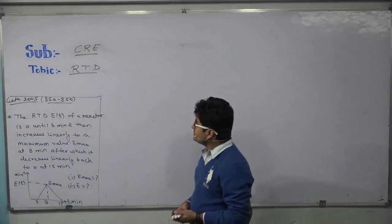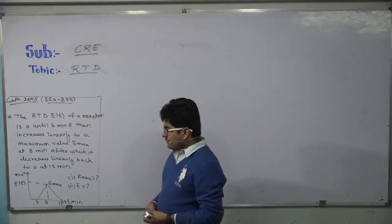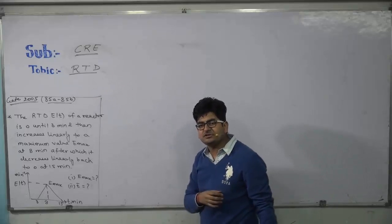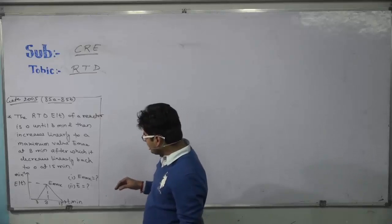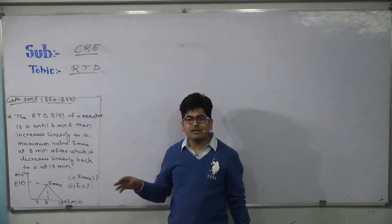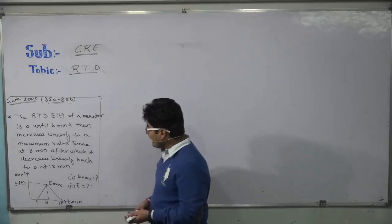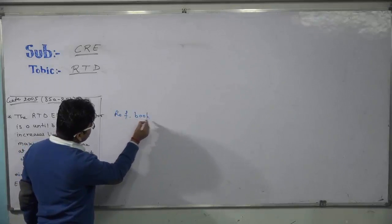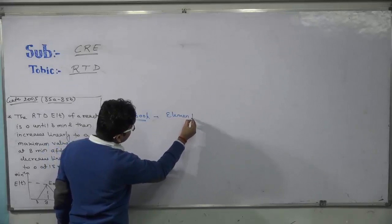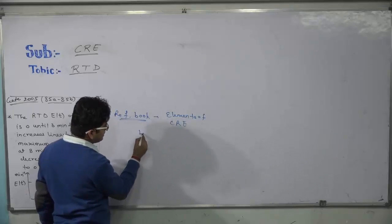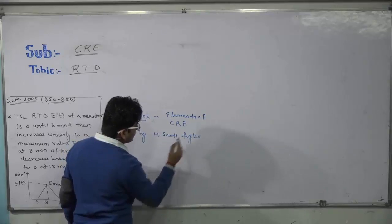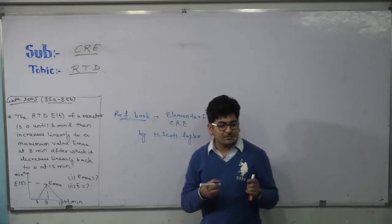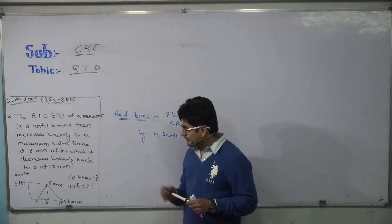Hello friends, my name is Ankush, faculty at Gate Coach. We will now talk about Residence Time Distribution (RTD) from the subject Chemical Reaction Engineering — how to solve a problem on RTD. For reference, you can use the book 'Elements of Chemical Reaction Engineering' by H. Scott Fogler, which is the best book for this topic. I'm assuming all of you know the basics, basic points and key points of RTD.